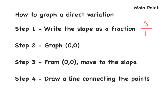Step 2: graph the point (0, 0), because in every direct variation, the line always goes through the origin. Step 3: from (0, 0), move according to the slope. When we talk about slope, there's this saying called rise over run. So if we have 5 over 1, from (0, 0) we would rise up 5 and then run to the right 1, since the denominator is a positive 1.